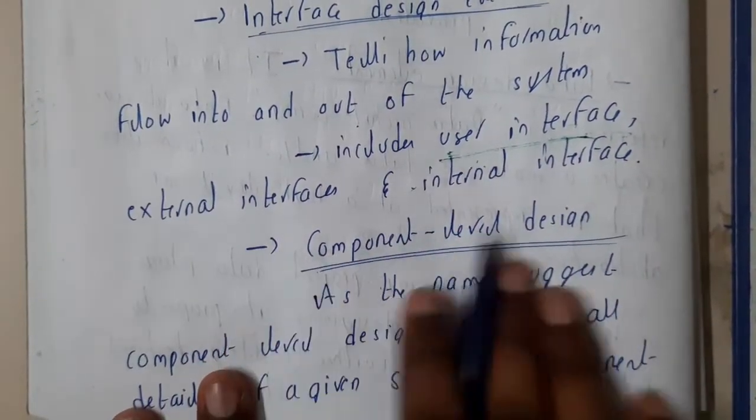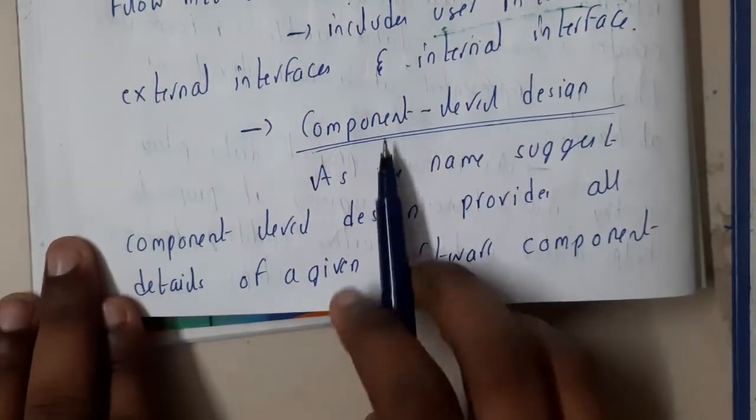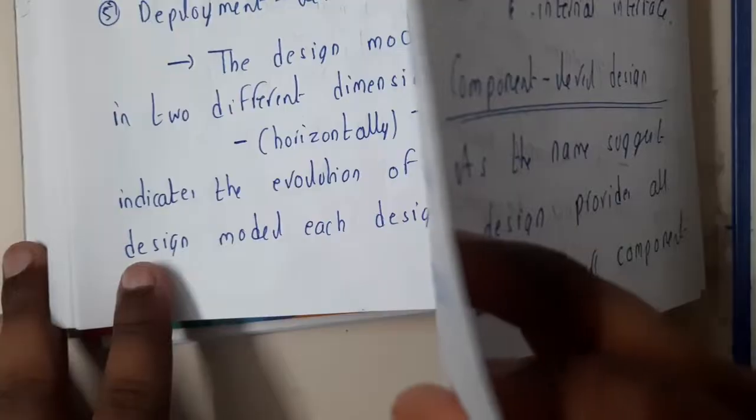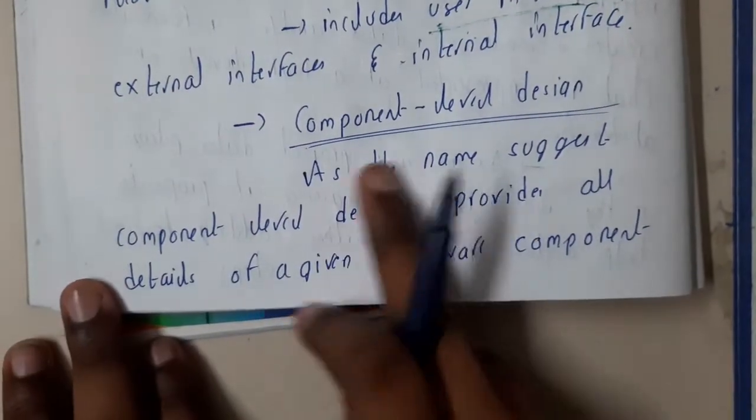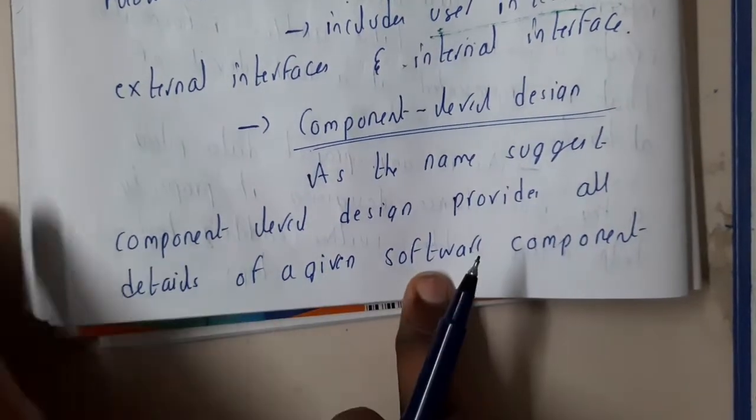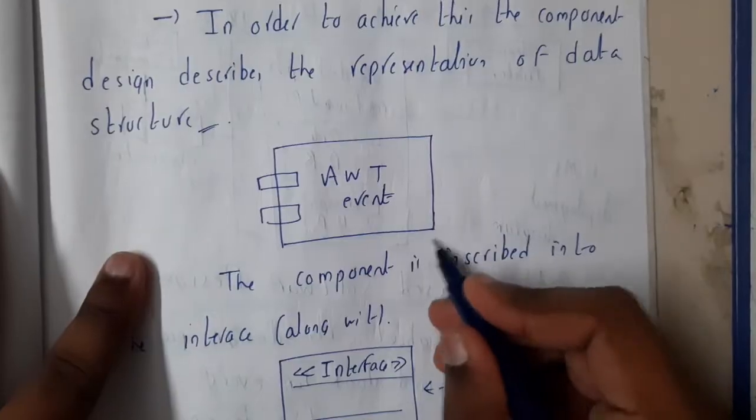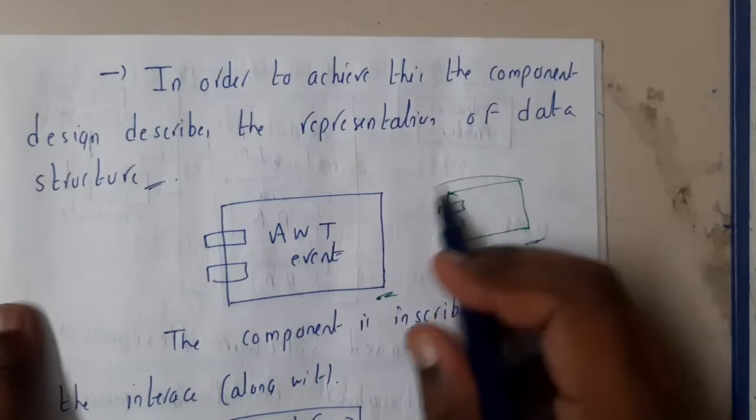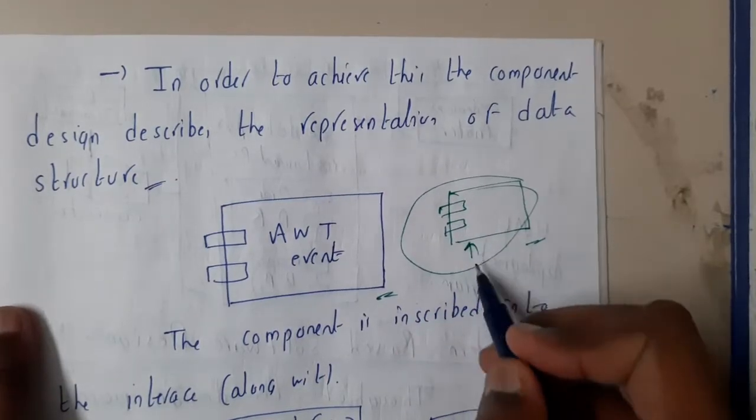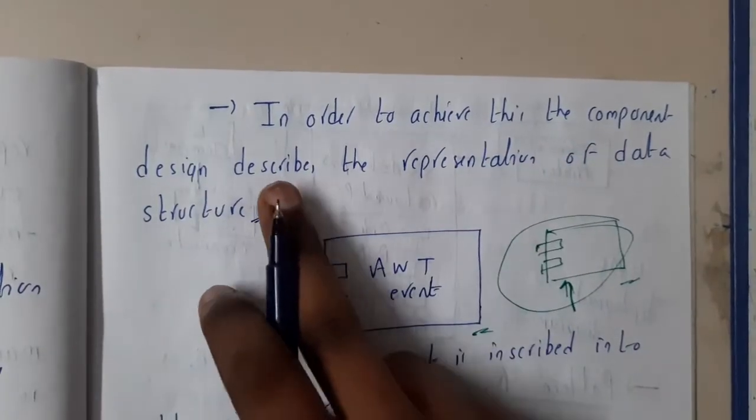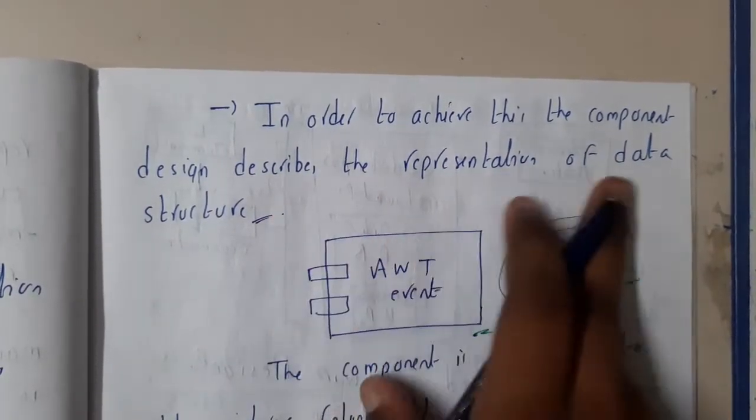The next one is component level design. As the name suggests, component level design provides the details against the software with respect to particular components. If you recall deployment diagrams and most of the places we drew these kinds of diagrams, this is nothing but a component.